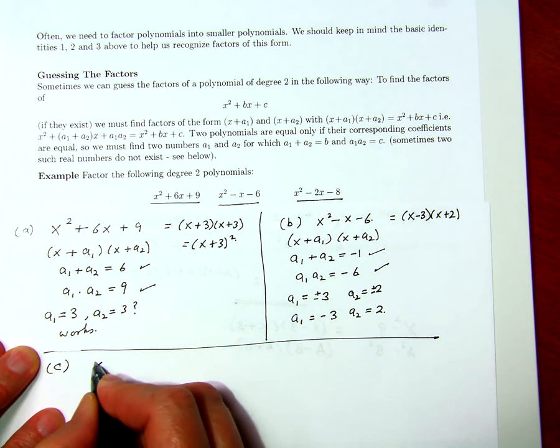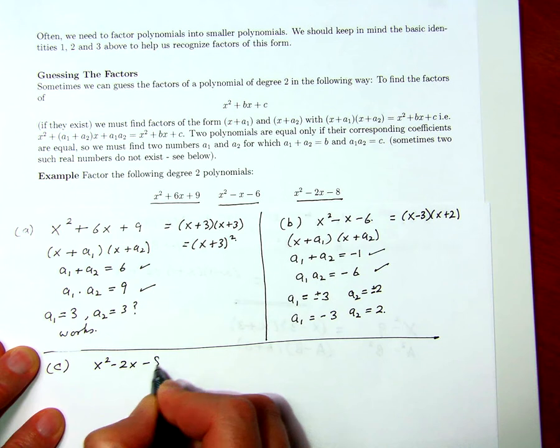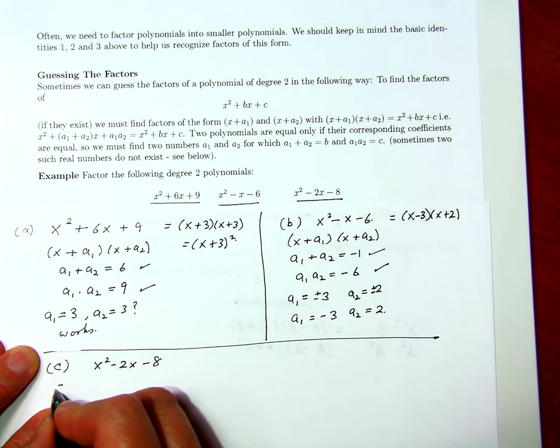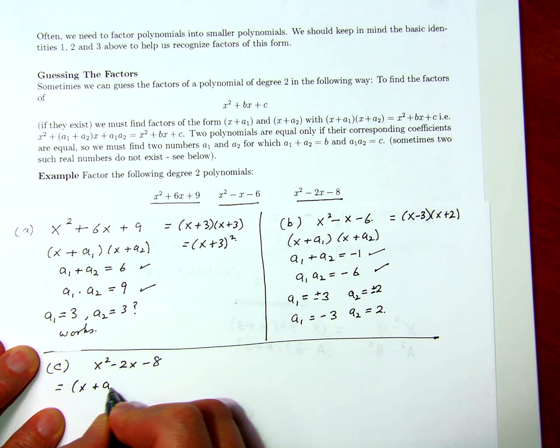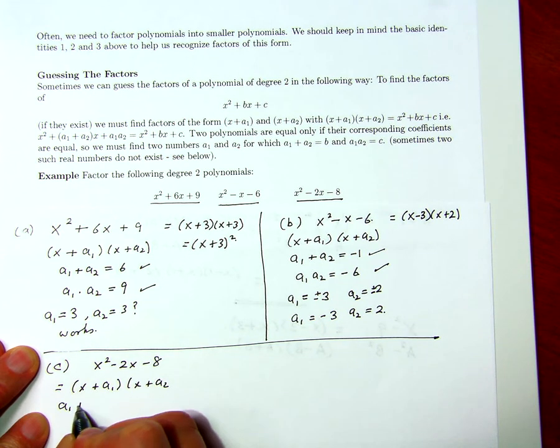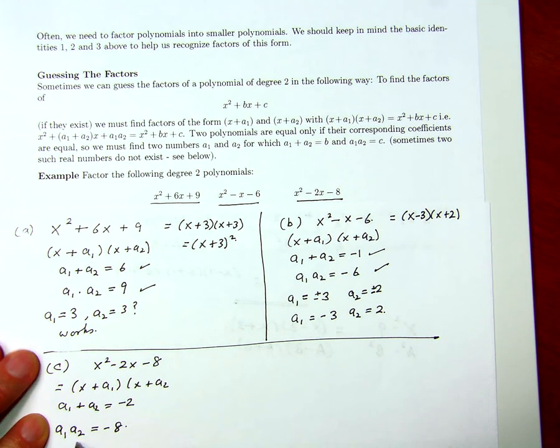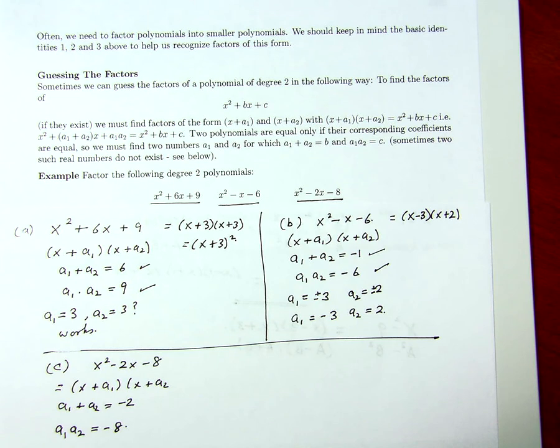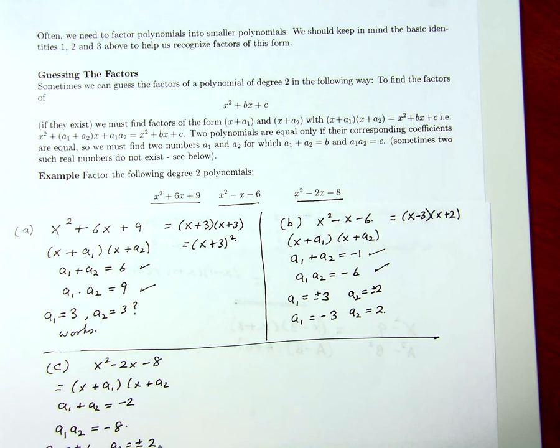Let me try the last one, x squared minus 2x minus 8. If that's x plus a1 times x plus a2, then I must have a1 plus a2 is negative 2, and a1 times a2 is negative 8. I'm looking for factors of 8 which differ by 2 in some sense. I'm going to try a1 is either plus or minus 4, and a2 is either plus or minus 2. When I add them, I want negative 2, so I'm going to make the larger one negative.